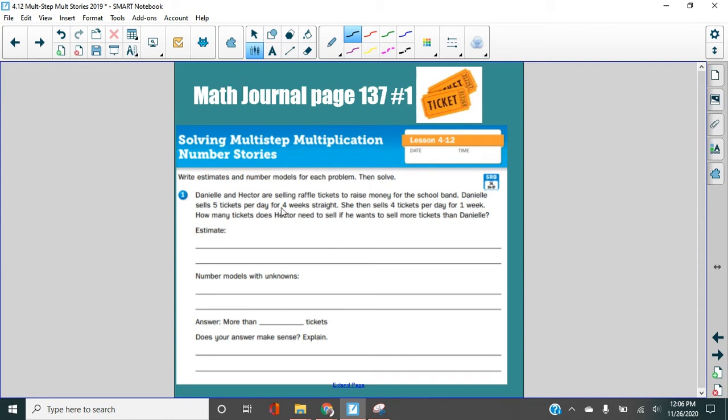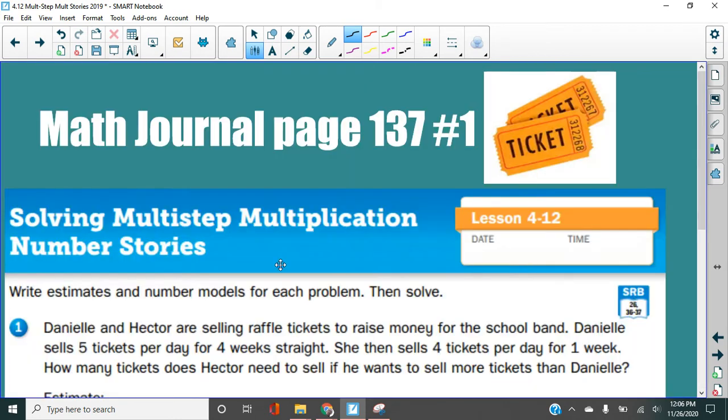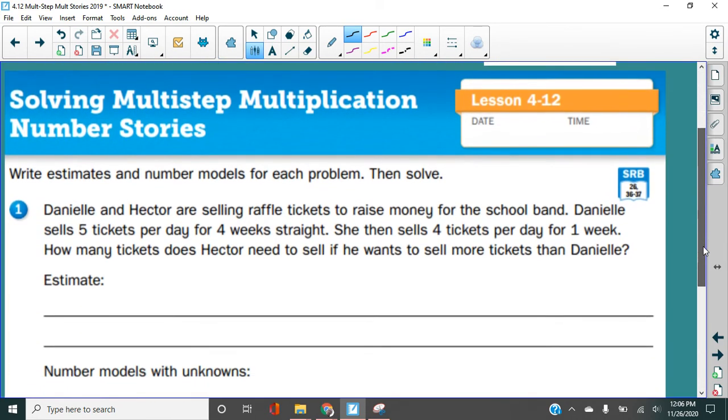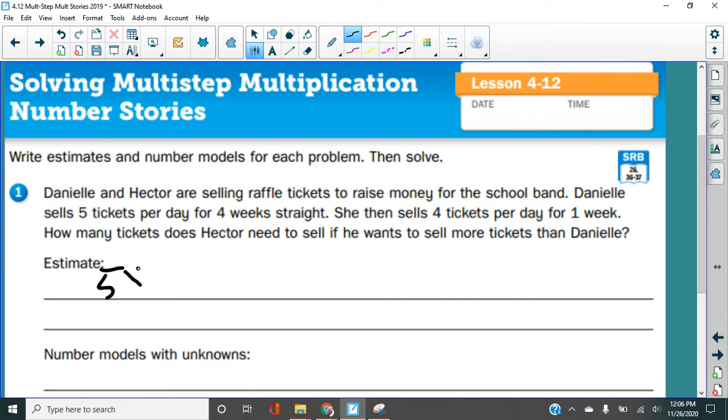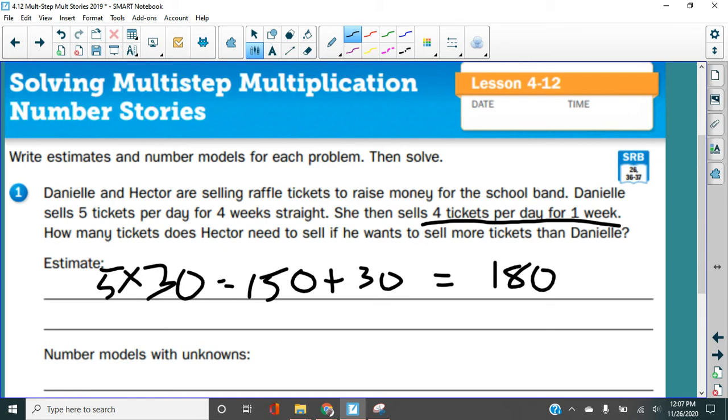We know that she sold five tickets per day for four weeks straight. Okay. So five tickets per day. Well, let's see four weeks, four times seven, right? Is 28. We're going to round that to 30. Okay. So our first part of our estimate, she does five tickets per day for about 30 days, right? Which is how much? 150, right? And then she sells four tickets per day for a week. So four times seven is 28. So that's about another 30 tickets. So our estimate here is that Hector is going to need to sell around 180 tickets.